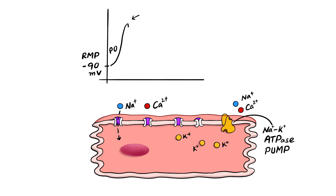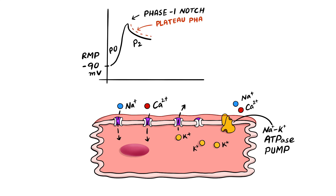Phase 1 shows a notch caused by the opening of potassium channels. In phase 2, inward calcium channels open, which maintain depolarization and give rise to a plateau phase. In phase 3, calcium channels close and potassium channels open again, giving rise to repolarization. This brings the cell back to resting membrane potential in phase 4.